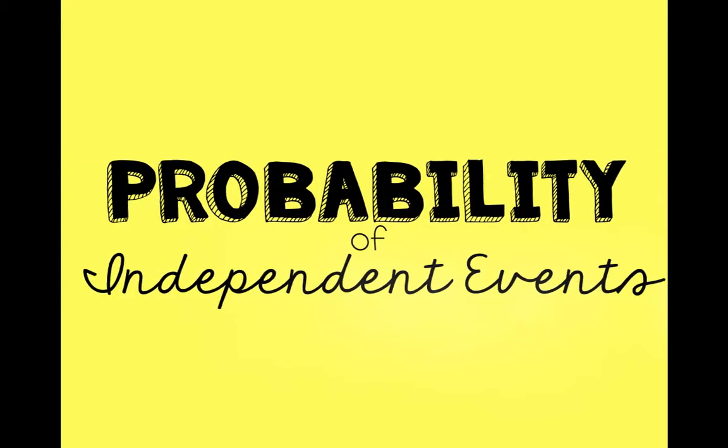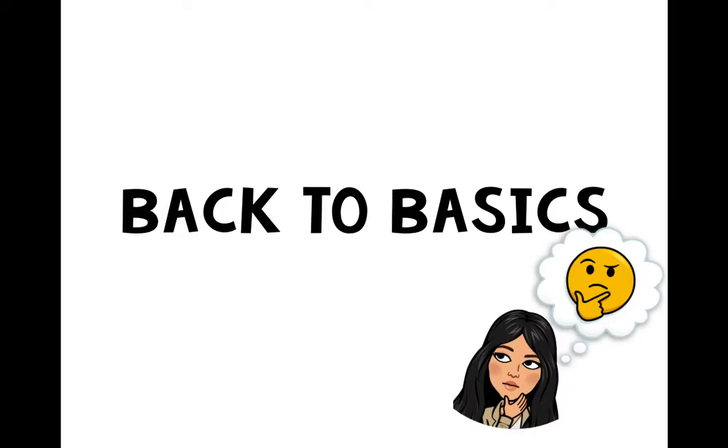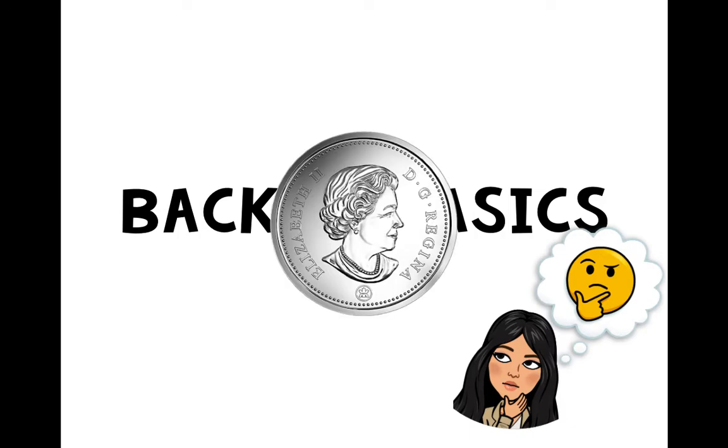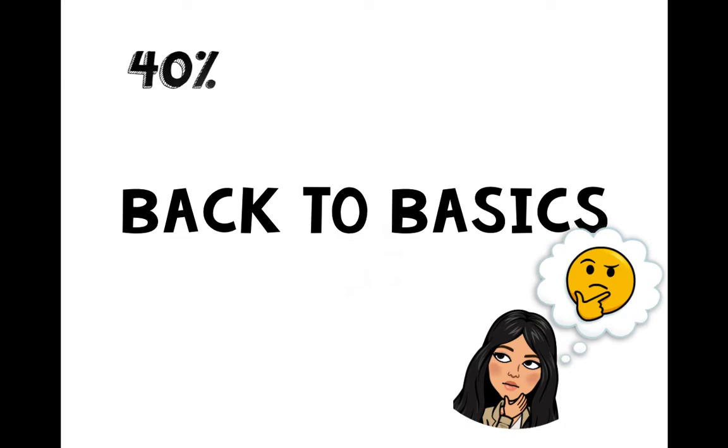Okay, so today we are going to be learning about probability and independent events. So just to review again, what is probability? Probability is a number that shows how likely an event will occur, and we know there's three ways to show probability. We got percentage, which is 40%, we have decimal, and we also have fraction. So these are all equivalent.